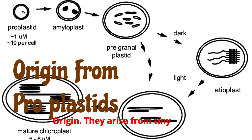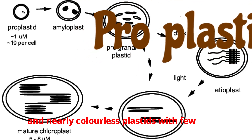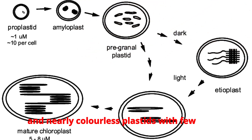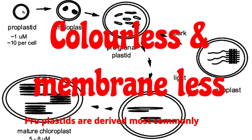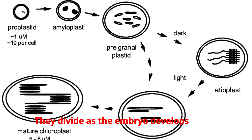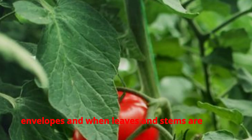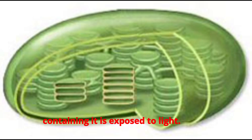Chloroplasts arise from tiny proplastids — immature, small, and nearly colorless plastids with few or no internal membranes. Proplastids are derived most commonly only from the unfertilized egg cell. They divide as the embryo develops, and when leaves and stems are formed, proplastids mature into chloroplasts. Young chloroplasts actively divide when the organ containing them is exposed to light.